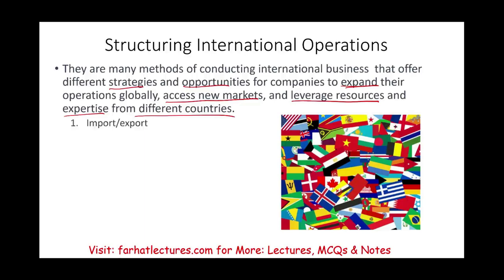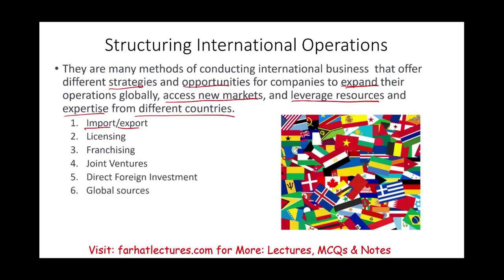The most simple and most common method of conducting international business is import-export. Exporting means selling to a foreign country or customer base; importing means buying from them. Other methods include licensing, franchising, joint ventures, direct foreign investment, and global sourcing. I'm going to go over each concept separately, explain what it is, and give the advantages and disadvantages, starting with import/export.